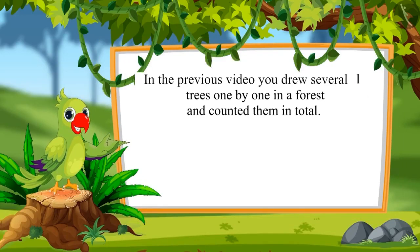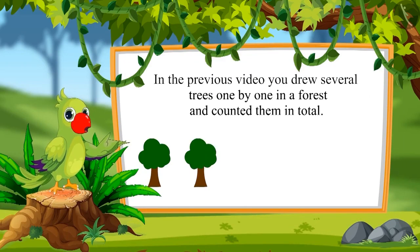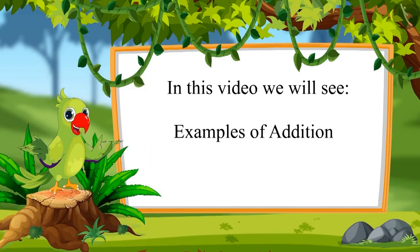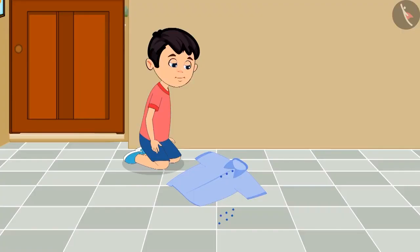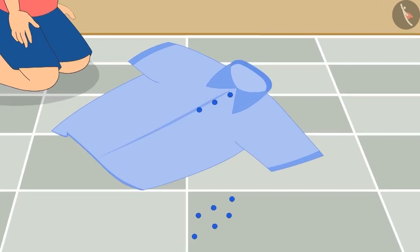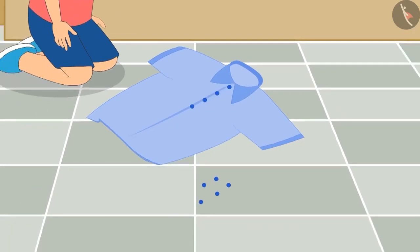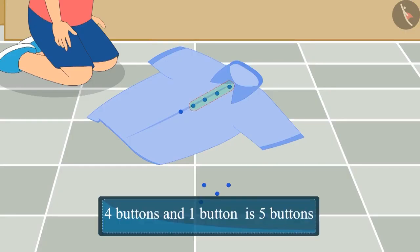Children, in the previous video you drew several trees one by one in a forest and counted them in total. Let us see some more examples. Today Joto wants to stitch a few buttons on his shirt. He already stitched three buttons, and then he stitched one more button — three buttons and one button is four buttons.